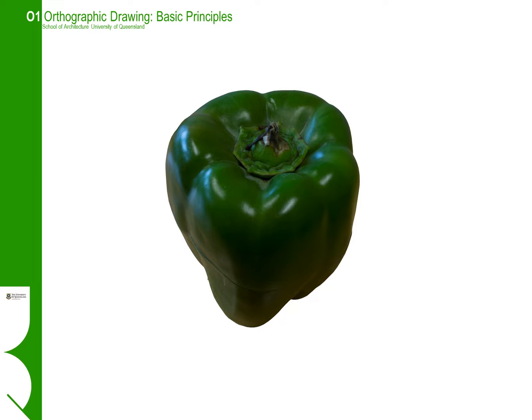You can see here with the image that we've got of the capsicum, taking a view that is three-quarters from the front and looking slightly from the top. Most of the things that we see and take photos of will always be in this kind of three-point perspective.